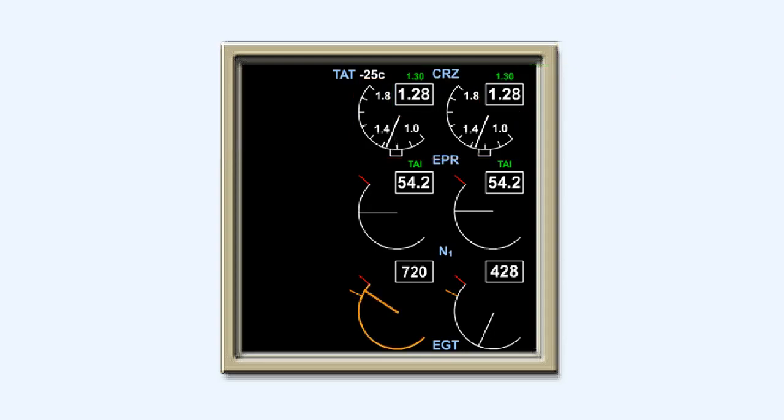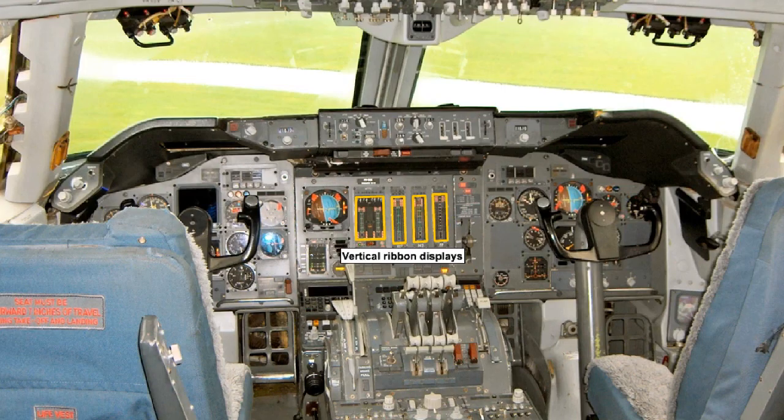If a parameter limitation is exceeded in the glass cockpit type of display, the whole of the dial displaying that particular parameter will change to either amber or red, depending on how far the limitation has been exceeded. On some older glass cockpit instrumentation, vertical ribbon displays are used.